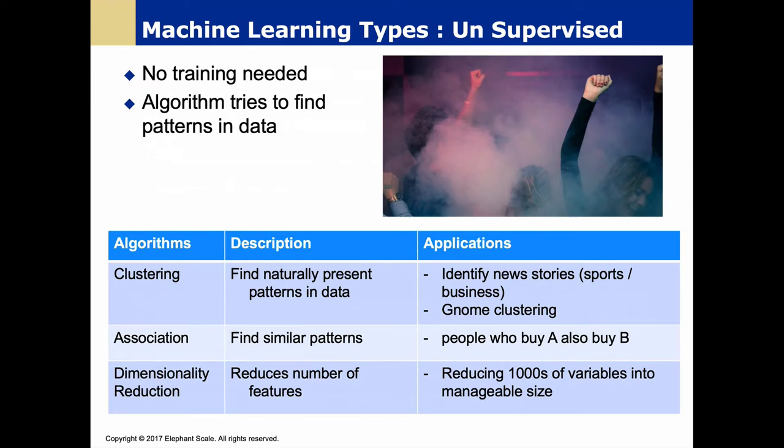Unsupervised machine learning doesn't involve training at all — it tries to find patterns in the data. The key word is inference rather than prediction. Things like clustering — what are the natural patterns in this data? Association — people who bought this also bought this. Those are inferences learned from the data, not directed by a human. Dimensionality reduction is also learned — taking thousands of variables into a manageable number of dimensions, learning a representation of features that does that automatically.